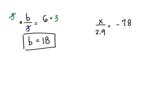My next problem has decimals. x divided by 2.9 equals negative 7.8. To get the x by itself, I have to undo division. And the opposite of division is to multiply. So I'm going to multiply on the left by 2.9, which means I have to also multiply on the right by 2.9.